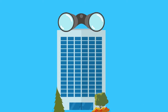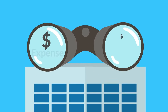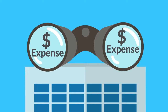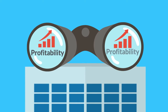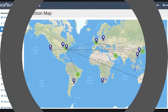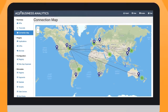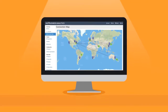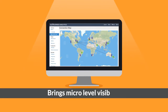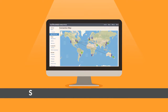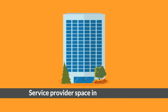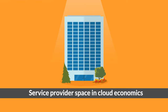Service providers need to have visibility at the micro level of expense and profitability for their services to be more competitive and agile. ACG Business Analytic Engine brings micro-level visibility to the service provider space in cloud economics.